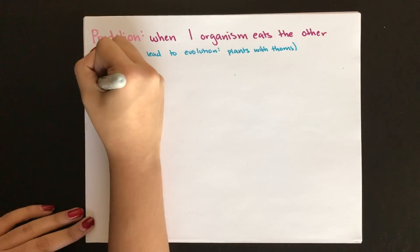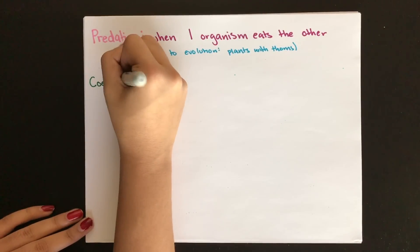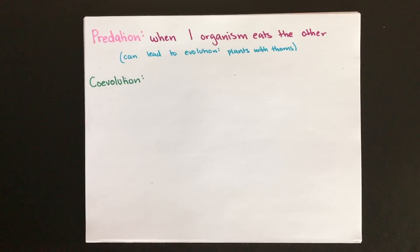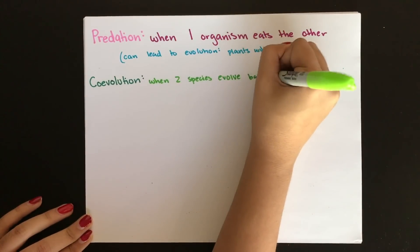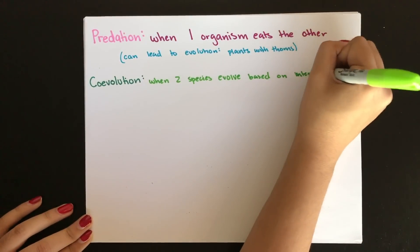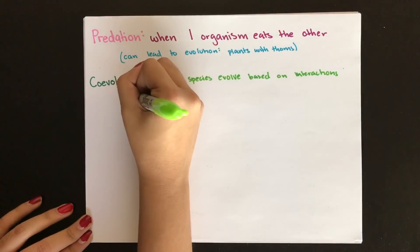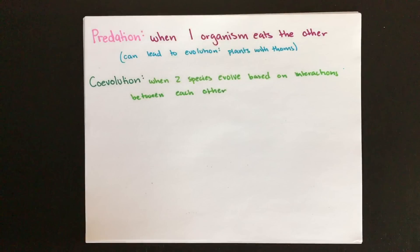The evolution of two species at the same time caused by their interaction is known as co-evolution. An example would be trees growing taller while giraffes evolve longer necks in response. While this won't happen within a couple of days, over multiple generations this is a classic example of co-evolution.